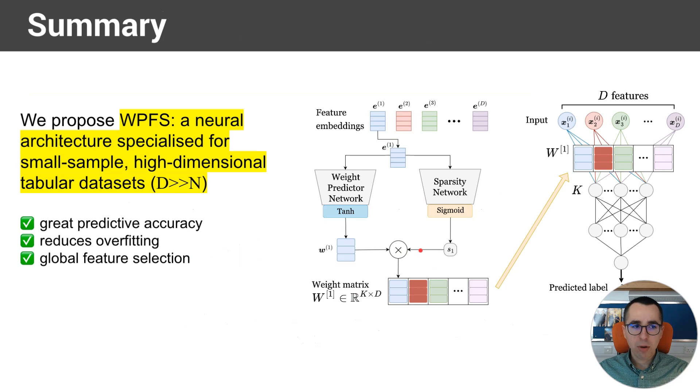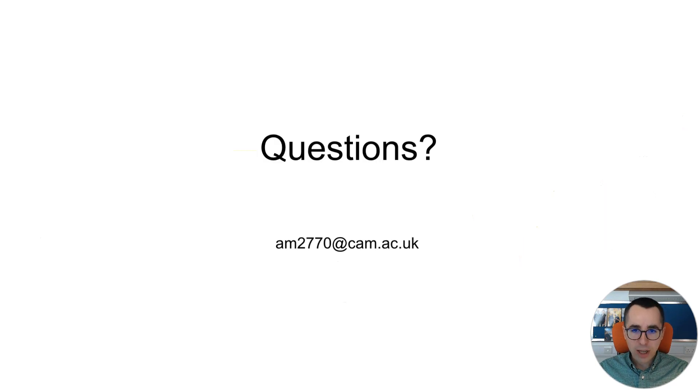In summary, we propose a novel neural architecture, which is specialized for small sample and high-dimensional tabular datasets. Those are usually in biomedical tasks. We show that our method has great predictive accuracy, it reduces overfitting, while simultaneously performing global feature selection and enabling the analysis of those features. For any questions, please reach out. Thank you for watching.